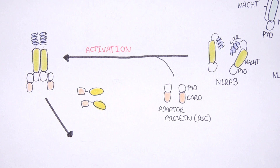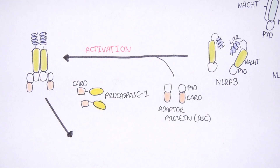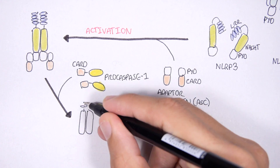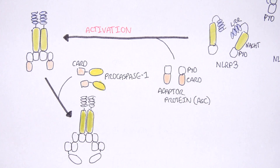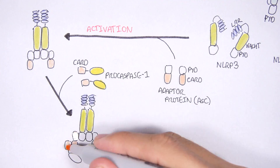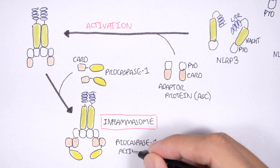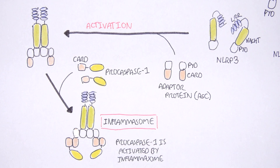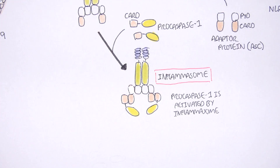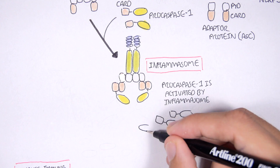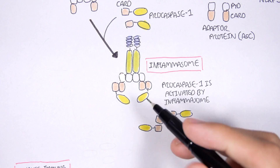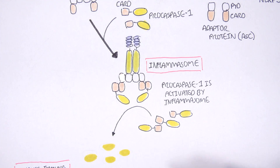Using its CARD domain, the adapter protein ASC brings monomers of pro-caspase-1 into close proximity. This structure can now be referred to as an inflammasome — or more correctly, the NLRP3 inflammasome. The NLRP3 inflammasome essentially initiates caspase-1 self-cleavage and the formation of the active heterotetrameric caspase-1.